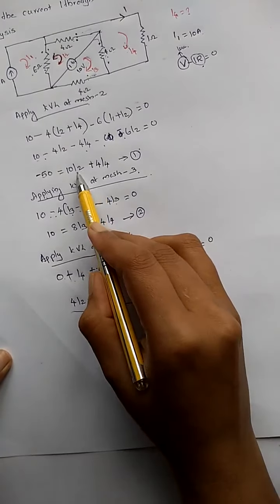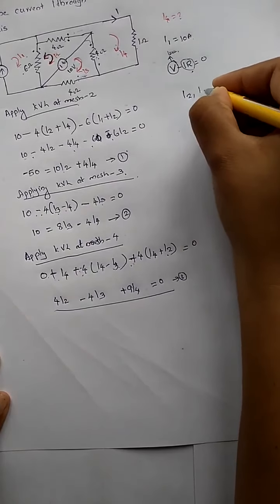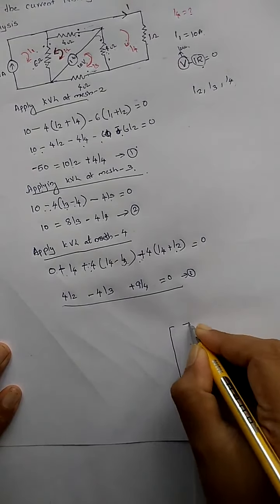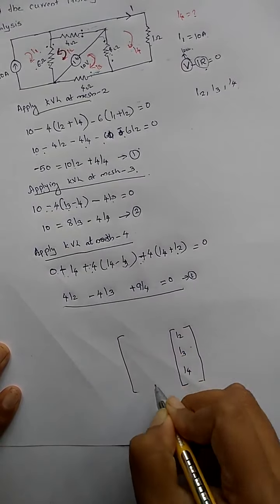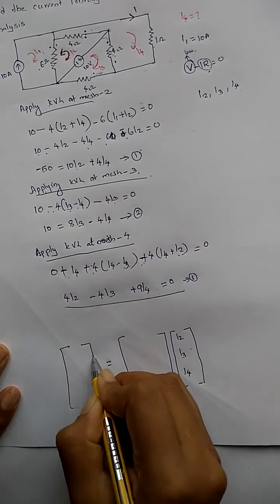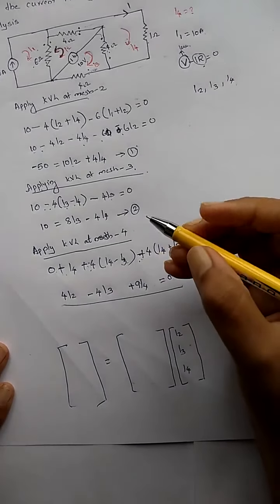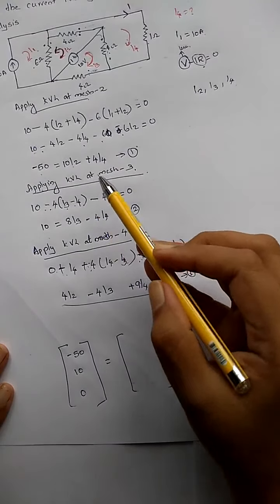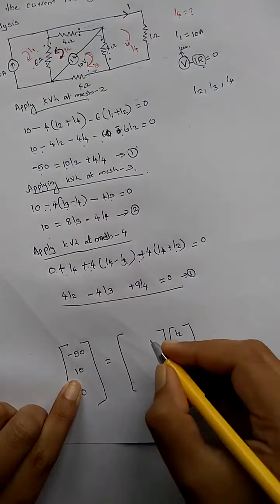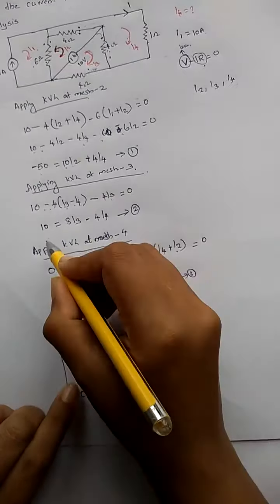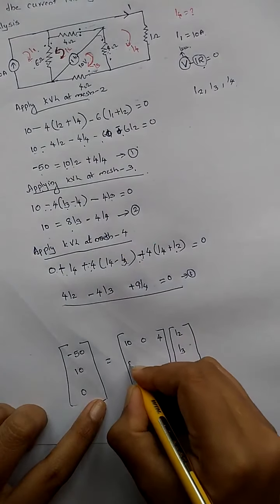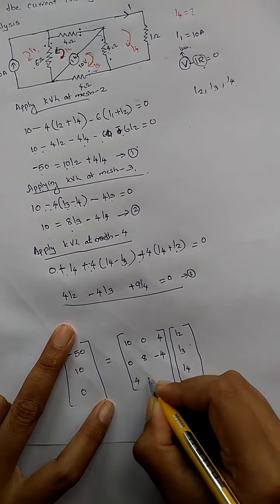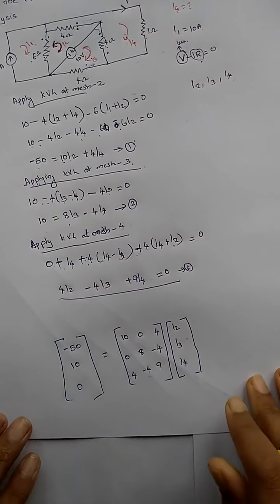Now we write these three equations in matrix form. The unknowns are I2, I3, and I4. The 3×3 coefficient matrix times [I2, I3, I4]ᵀ equals the right-hand side vector [−50, 10, 0]ᵀ. The coefficient matrix is: row 1: [10, 0, 4]; row 2: [0, 8, −4]; row 3: [4, −4, 9].